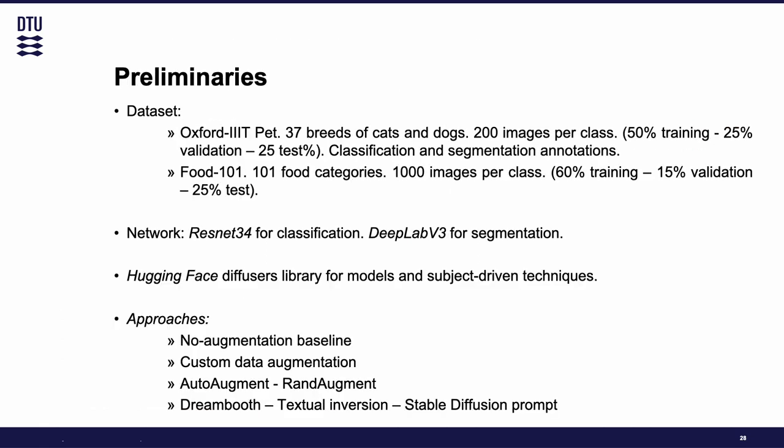Now let's head to the main experiments. The datasets we are going to use are Oxford 3T Pet and Food101. The main one is Oxford Pet with 37 breeds of cats and dogs and 200 images per class. We are going to use this dataset for classification and segmentation since it has those annotations, and we are also going to use Food101 with 101 food categories. For the networks, we are going to use ResNet-34 and DeepLabV3, this last one for segmentation, with the Hugging Face diffusers library for the models and subject-driven techniques.